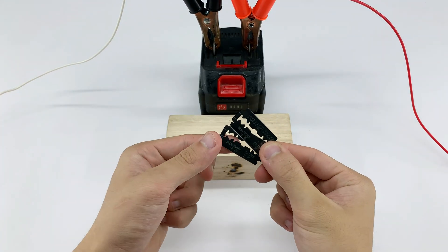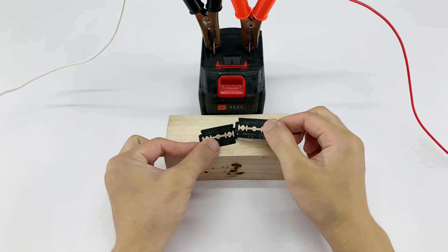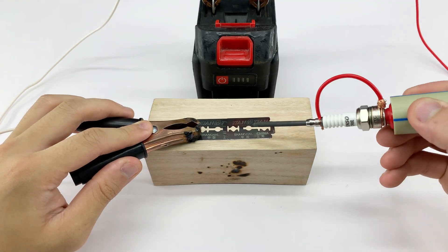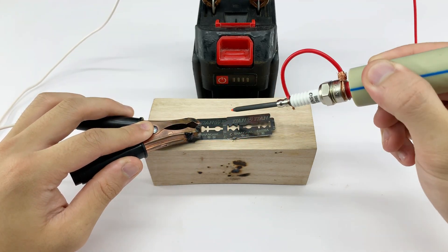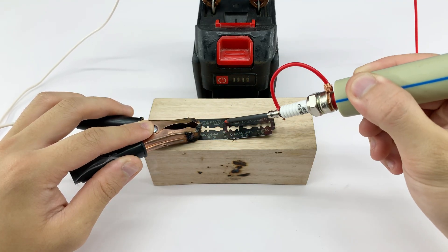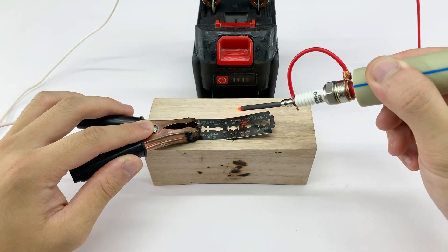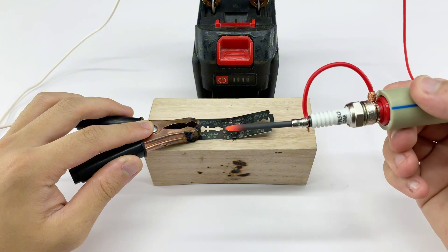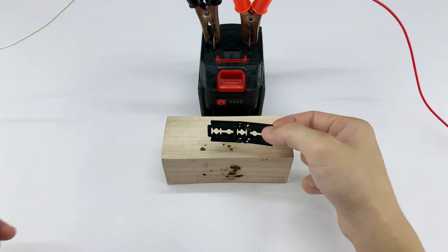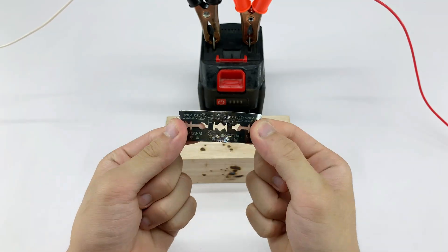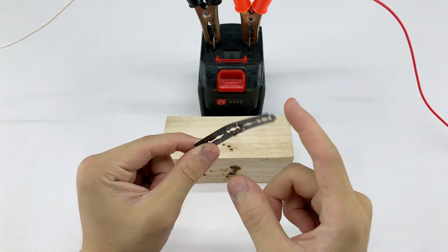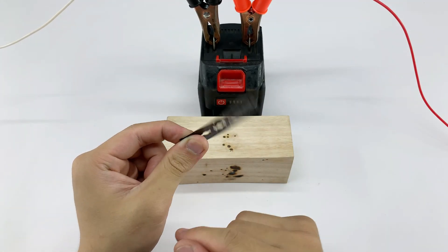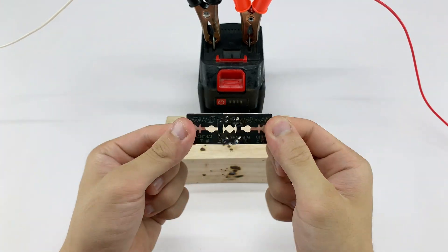All right, I'm starting the first experiment now. With these two razor blades, it's not really difficult. But, you know, our DIY welding device isn't a store-bought one, so we can't do experiments that are too big. Small tests work just fine and still show the effect.